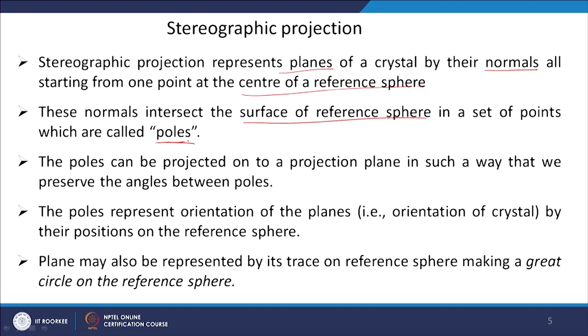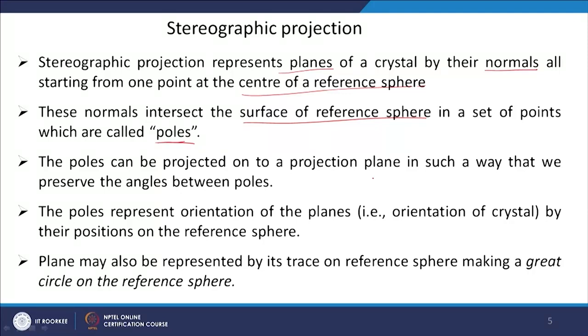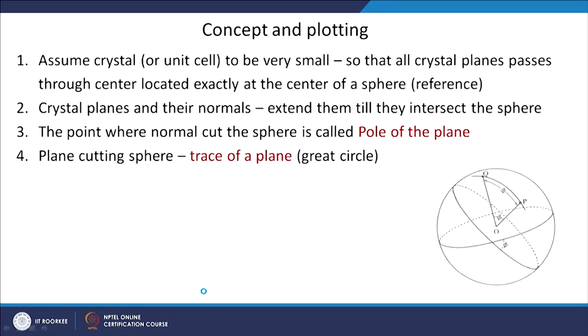Basically, if I take a unit cell, a plane has a normal, and this normal will go and cut the reference sphere — I will discuss what the sphere means. We then project these poles onto a projection plane in such a way that we preserve the angles. The poles represent the orientation of the planes and the orientation of the crystal by their position on the reference sphere. A plane may also be represented by its trace on the reference sphere, making a great circle.